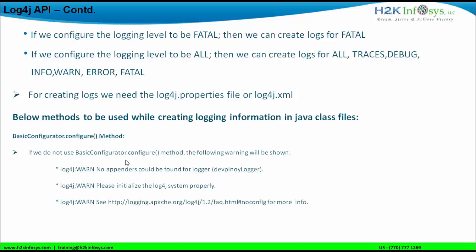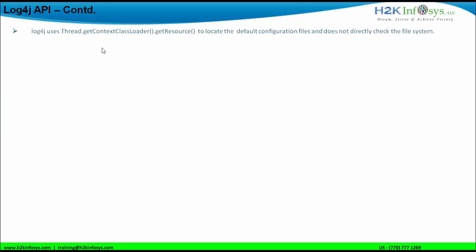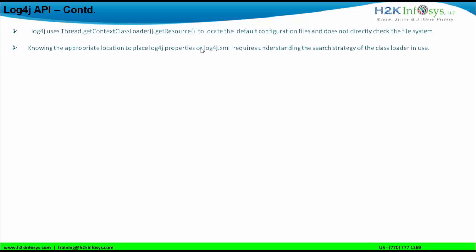Logging information is not created inside the log folder of the project for HTML format and R format. This is not happening because I have not used this particular method. This occurs when the default configuration files — that is log4j, in our case log dot properties file, or log4j dot XML — cannot be found and the application performs no explicit configuration. Log4j uses the getResource method of the getContextClassLoader to locate the default configuration file and does not directly check the file system.